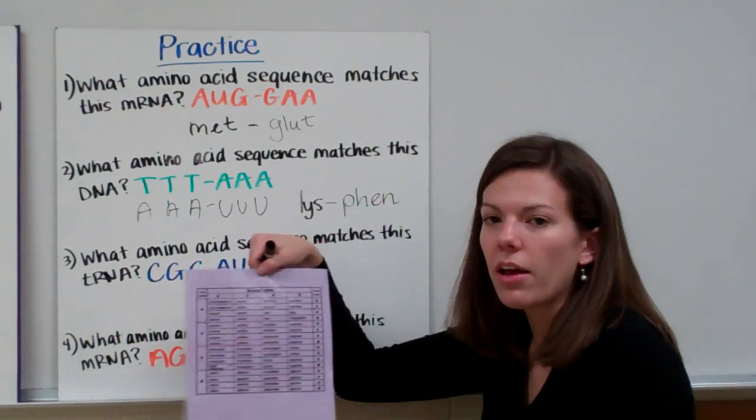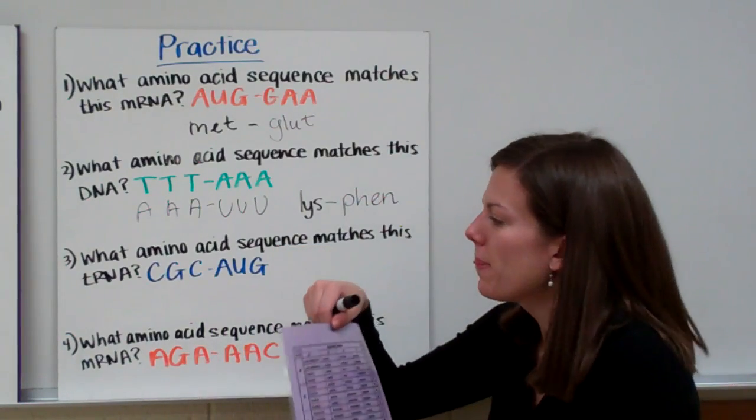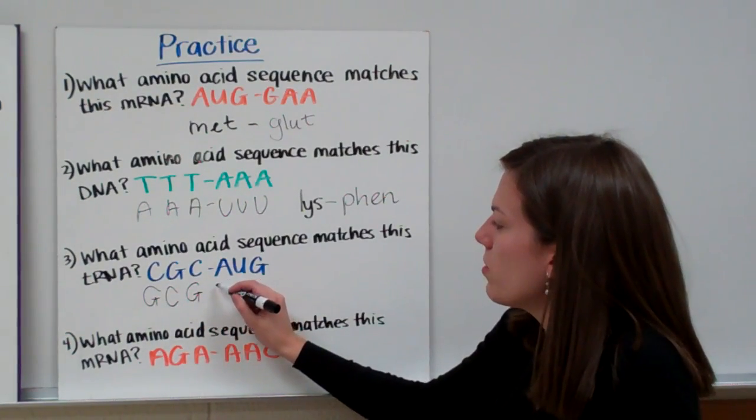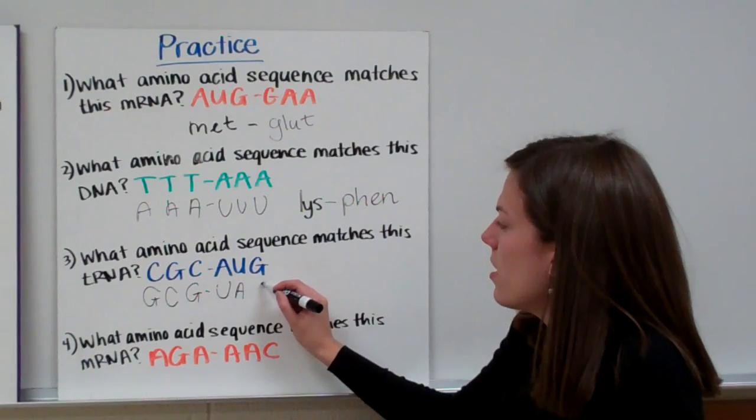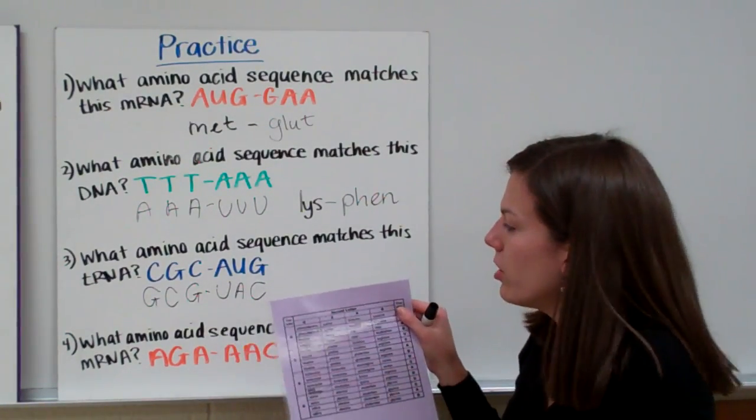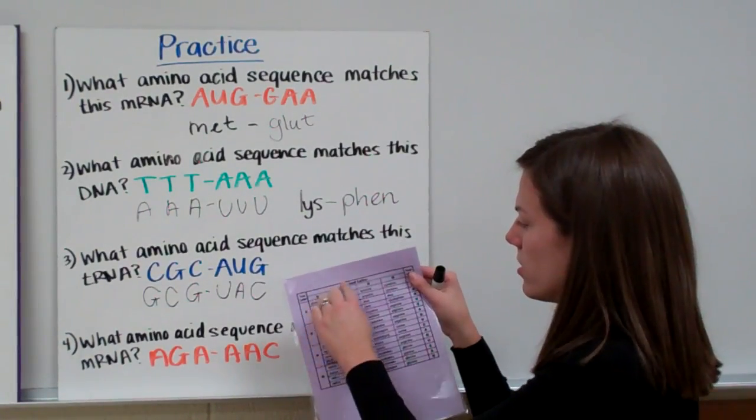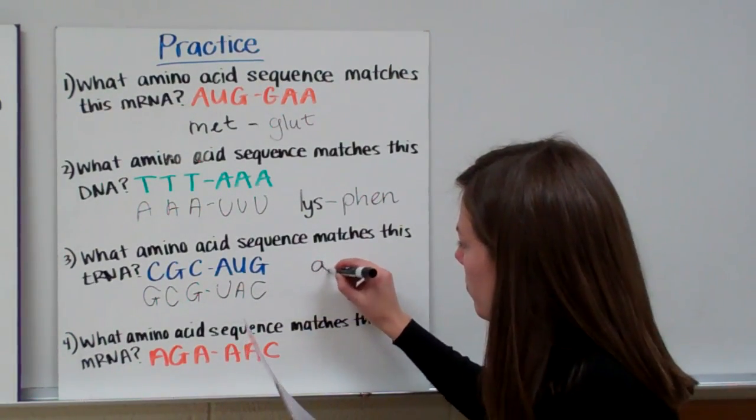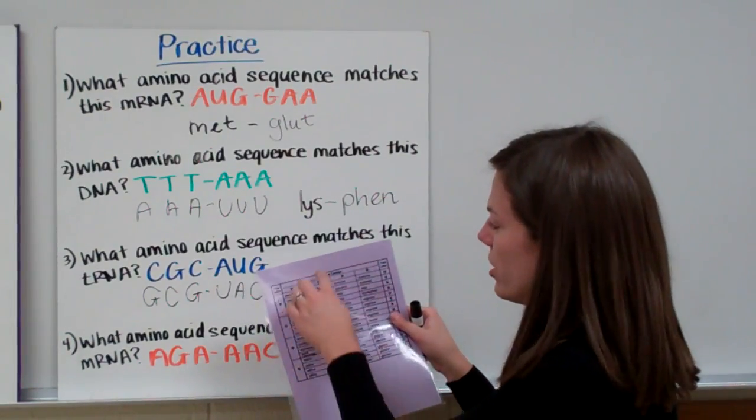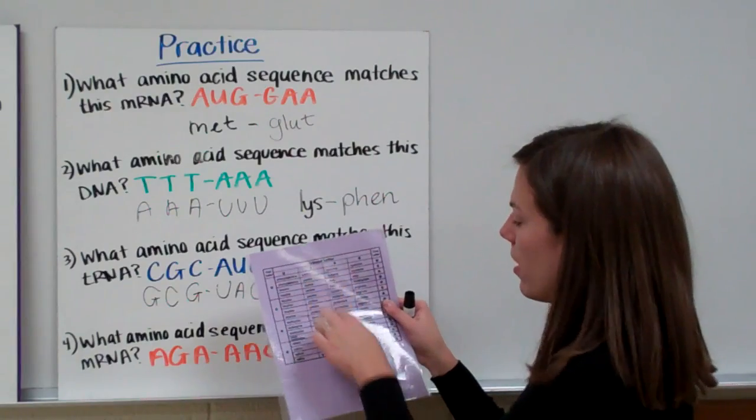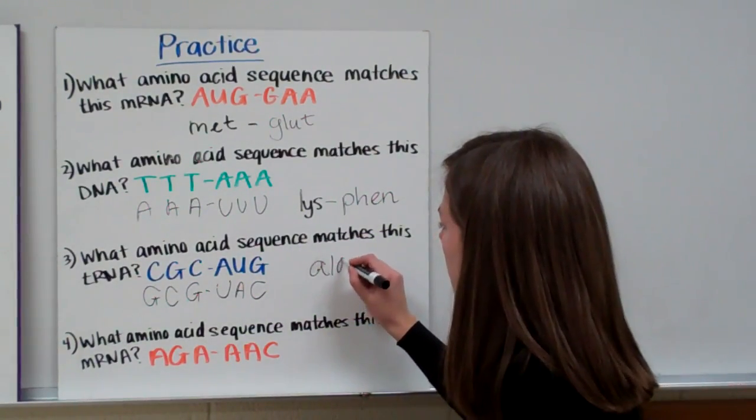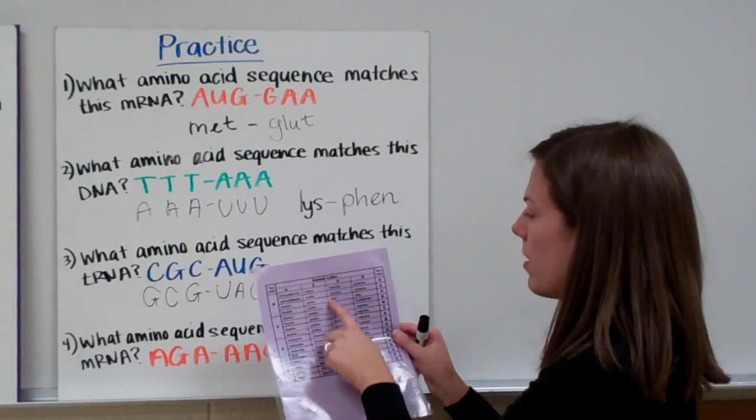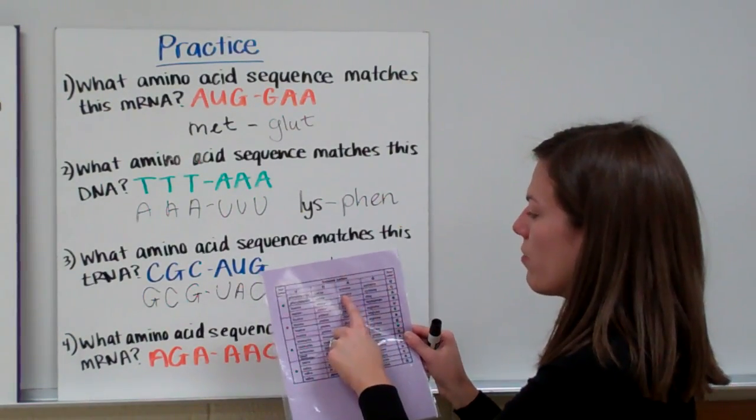Our next problem says what amino acid sequence matches this tRNA? And again, we can only use mRNA on this chart. But they gave us tRNA. So we have to switch it to mRNA. C would normally go with G. G goes with C. C goes with G. A goes with U. U goes with A. And G goes with C. Now we can use that mRNA on our codon chart. So G, C, G. G is our first letter. C is our second letter. We line up those two letters into this box. And that's alanine. G, C, G. This entire box says alanine. And then the next three say U, A, C. So we start with U. Our second one is A. We line up those two letters into this box. And then we find our third letter. Move over to that row. That's tyrosine.